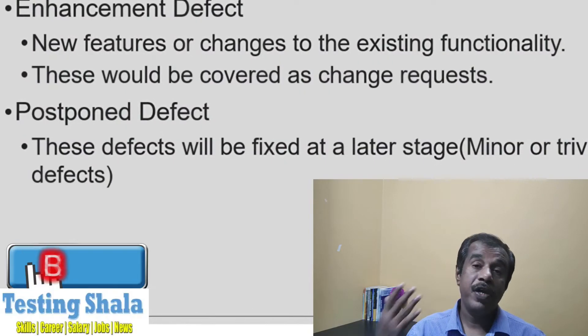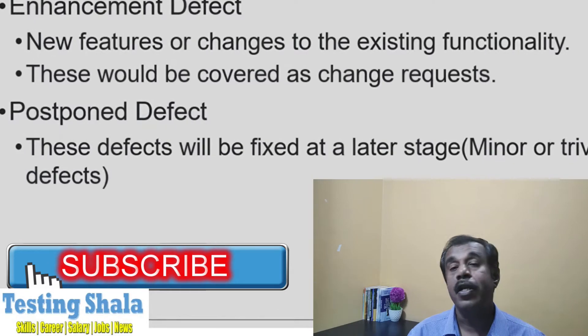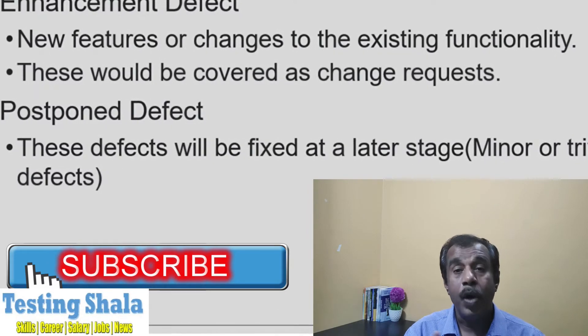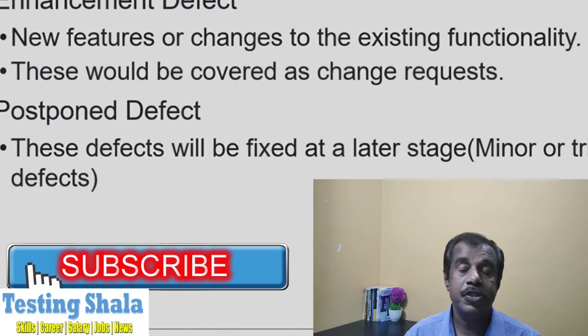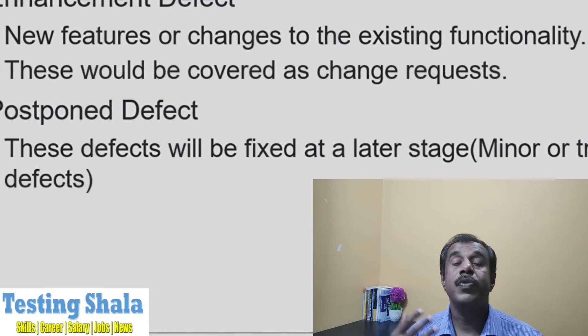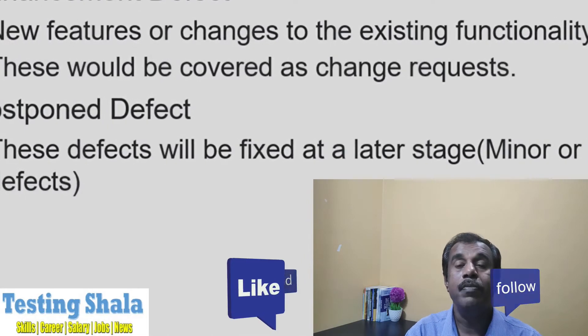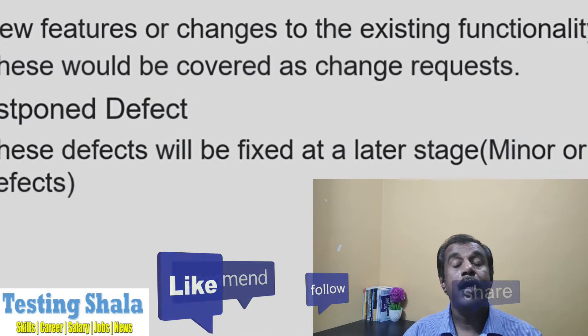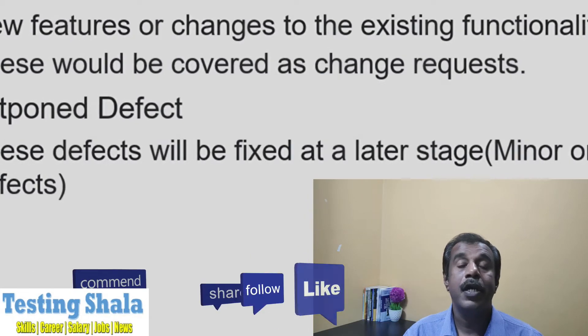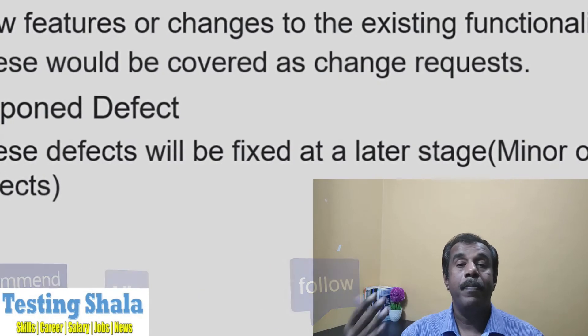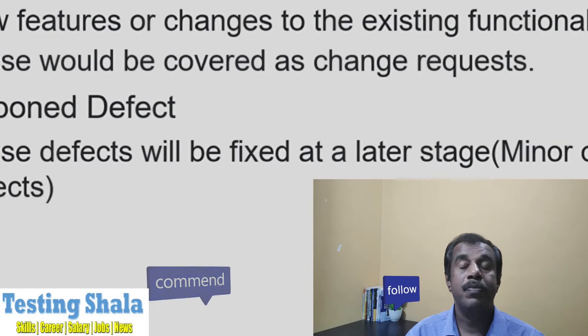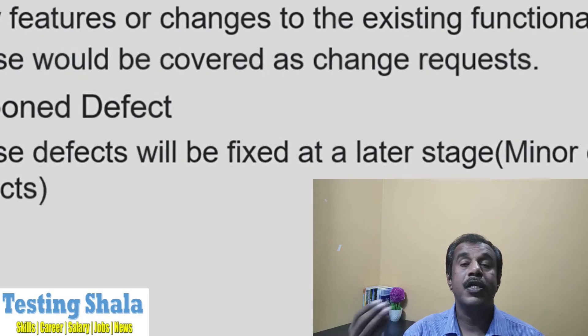Postponed defects are defects that will be fixed in later releases. Not all defects logged in the defect tracking tool are equally important. Because of lack of time and other constraints, we will only fix major defects, blocker defects, or critical ones — not everything at that time.